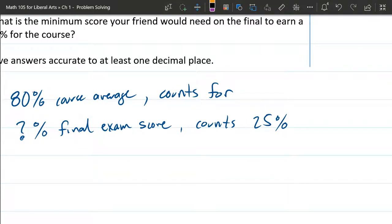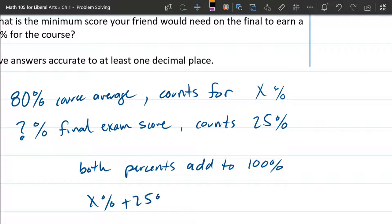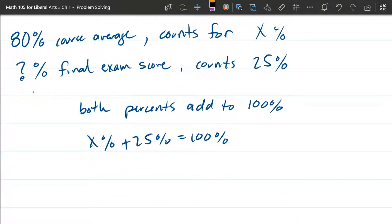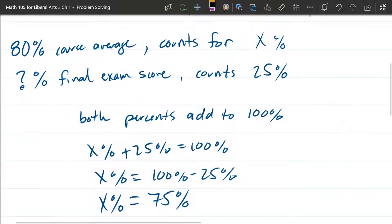So we're going to get the two percents added together. Both percents add to 100%. I'll call this X percent. So X percent plus 25% equals 100%. You just subtract 25% from both sides. So we get 100% minus 25%, which equals 75%. Some of these percents you can probably just do in your head without writing all this down.